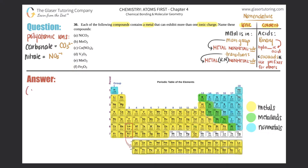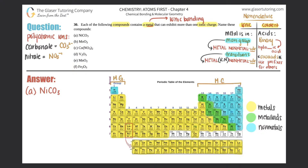We have NiCO₃. They tell us that in each example there's a metal, and anytime you see a metal this is always going to be ionic bonding — no covalent bonding here. There are two things to consider: whether your metal is a main group metal or a transition metal. Main groups are group 1 and 2, and then 13 through 18. Transitions are groups 3 through 12.